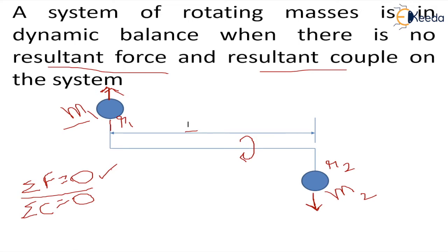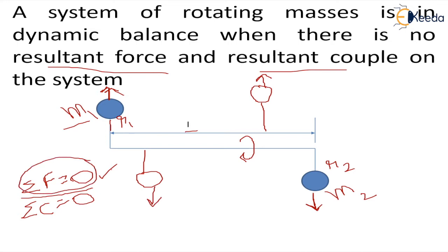If this condition is not met, we add counter masses to the system. There are two ways of balancing: either by redistribution of masses or by adding counter masses. When the machine is already designed and in operation, it is not possible to redistribute masses, so we place counter masses. These counter masses are placed such that the resultant forces balance the existing forces and the couples produced also balance the resultant couple, ensuring no resultant force and no resultant couple in the system. Either one or two counter masses can be added to make the system dynamically balanced.